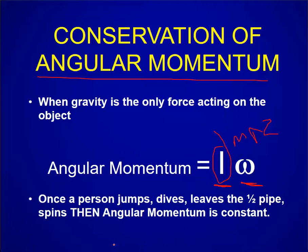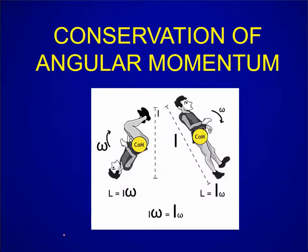So once a person jumps, dives, leaves a half pipe, or spins, the angular momentum is constant. If we have a large moment of inertia or large distribution of mass, then our angular velocity is small. If we decrease our moment of inertia by tucking or bringing our distribution of mass or body parts closer to our center of rotation, then our angular velocity will increase.